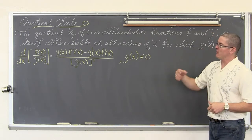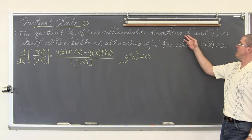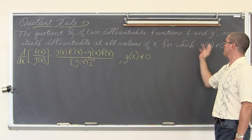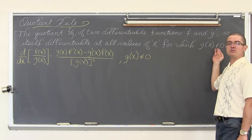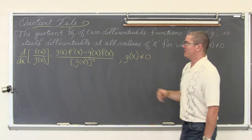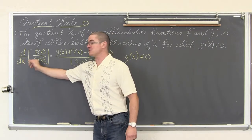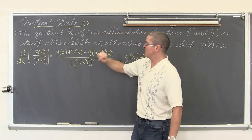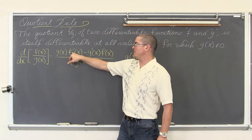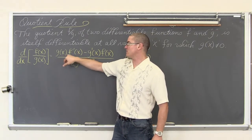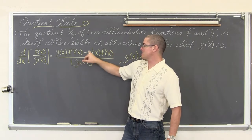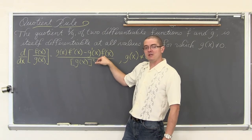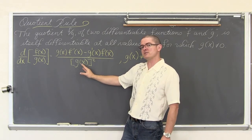The quotient of f and g, or f over g, of two differentiable functions f and g is itself differentiable at all values of x for which g of x is not equal to zero. The formula, or the rule, is: the derivative with respect to x of f of x over g of x is equal to g of x times the derivative of f of x — in other words the denominator times the derivative of the numerator — minus the derivative of the denominator times the numerator, over the denominator squared.